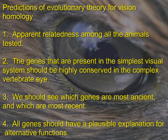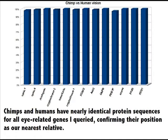We should also be able to tell, based on the accumulation of heritable changes, which genes are most ancient and which are most recent. We should also be able to find plausible alternative functions for the ancestors of the visual genes. Part 1: Relatedness. If we start with comparing the chimpanzee visual system to that of humans, almost no differences can be detected.